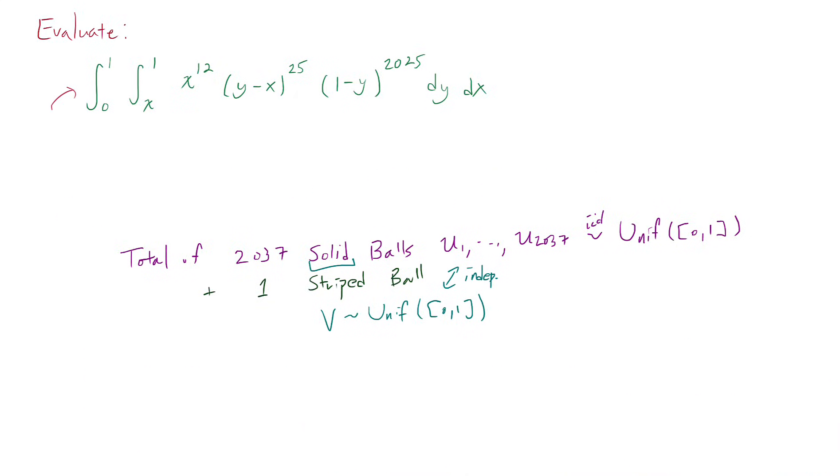So having established the warm-up problem, now I want to go to the final boss here, where we have the double integral. And the idea behind this is going to be very similar. I actually encourage you, if you want, to pause the video here and see if you can evaluate this on your own before watching on. How we're going to do it is we're just going to change the argument. So rather than having one striped ball, now let's imagine we have two striped balls. And rather than v, let's say we have v1 and v2, uniform and random.